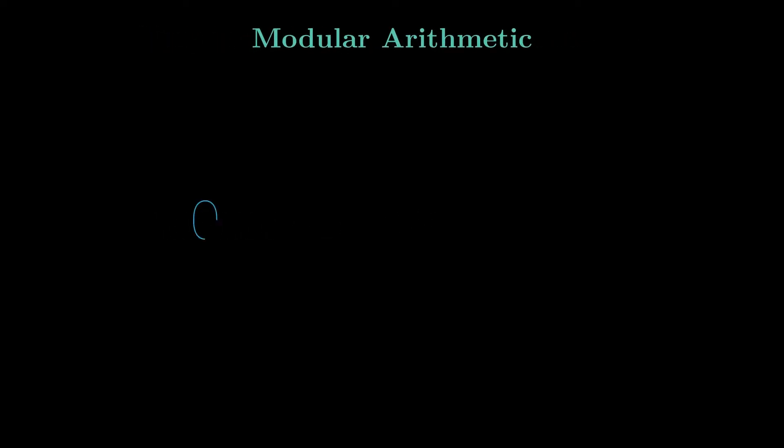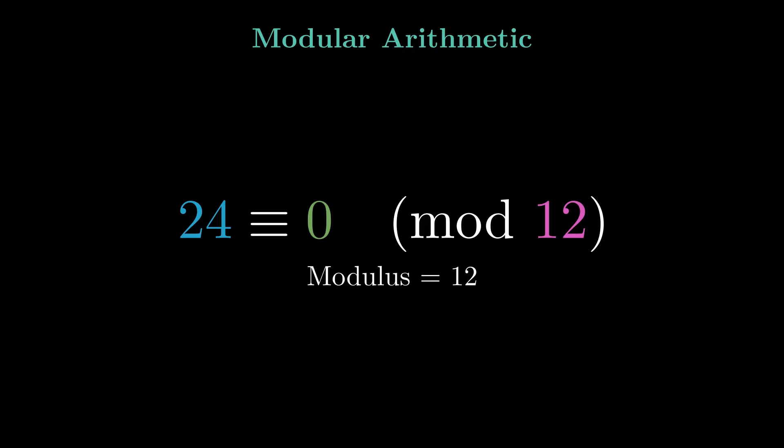Modular arithmetic is a system of arithmetic for integers where numbers wrap around when reaching a certain value, called the modulus. For instance, there are only 12 hours on the face of a clock. If the time now is 7 o'clock, 10 hours later will be 5 o'clock, and we do not say 17 o'clock.